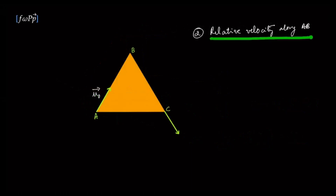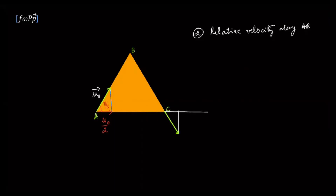Now using the concept that relative velocity is zero along the line joining any two points on a rigid object. Looking at AC first: the component of A's velocity along AC is u0 cos 60 = u0/2. So C must also have a component u0/2 along AC. Since the angle is 60 degrees, C's speed must be u0. Now for AB: along the line joining A and B there can be no relative velocity, so B must have a velocity component u0 along AB. Similarly along BC, B must have a velocity component u0.